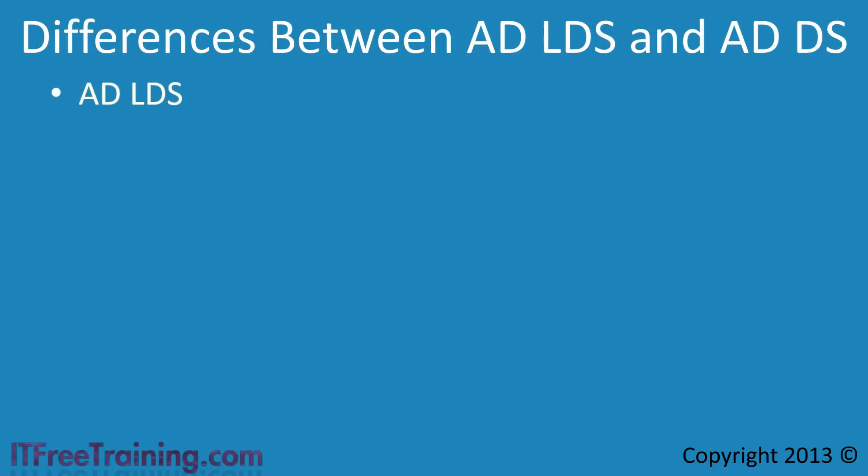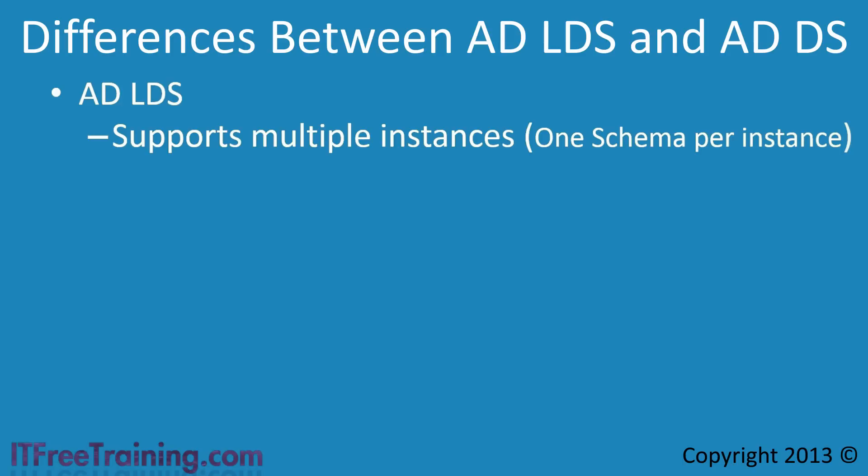The first big difference is that Active Directory Lightweight Services supports multiple instances. With Active Directory Domain Services you can only run one instance per domain controller, meaning one domain controller holds one Active Directory domain. This makes Lightweight Services a great choice if you have multiple applications each requiring a separate directory service, and you can remove and add instances as needed. You are still limited to one schema per instance, but being able to create as many instances as you want allows you to work around that limitation.